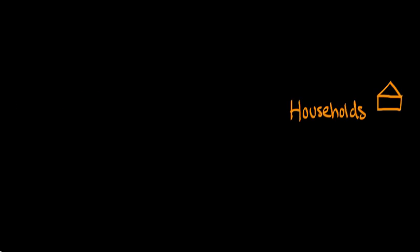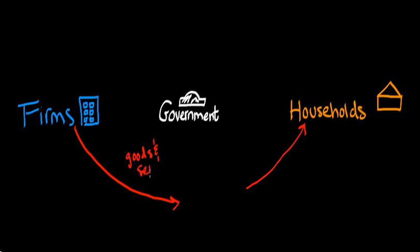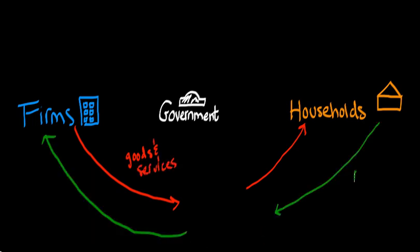To start with, you have three separate entities: households, firms, and the government. Firms sell goods and services to the households, and in return, the households pay them with money.